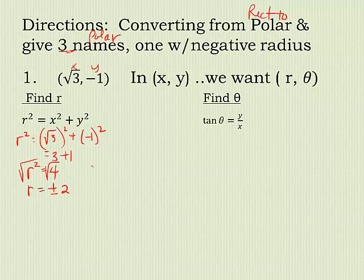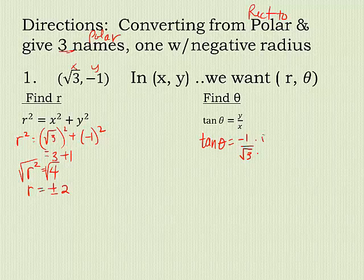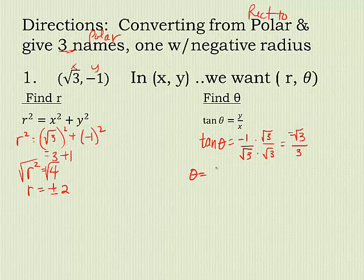Over here, I've got to find theta. So the tangent of theta, I know, is the y coordinate over the x coordinate. But that means I have to rationalize over 3. So now, what is theta? Well, theta is the inverse tangent of negative square root of 3 over 3.